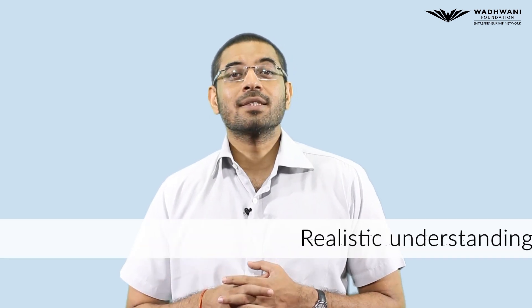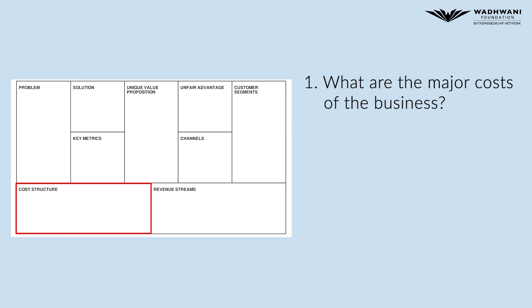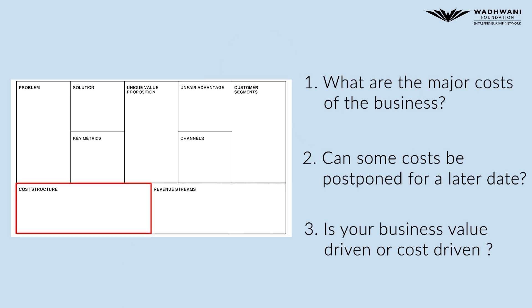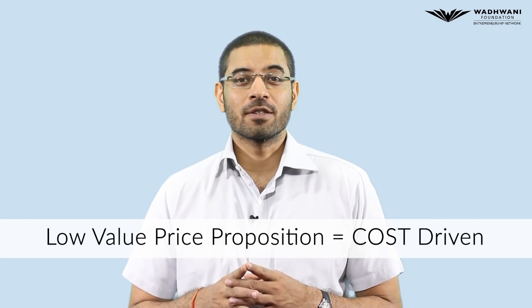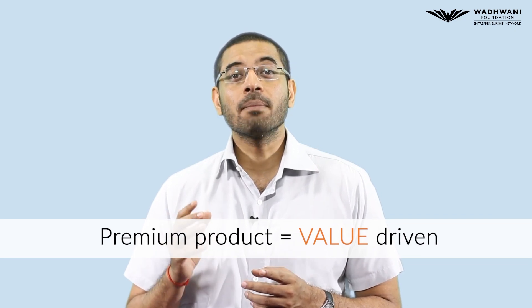The first step for an entrepreneur is to identify all costs associated with the business. A realistic understanding of the costs of the business is one of the hallmarks of a good business model. To fill out the cost structure block, you need to answer key questions such as: what are the major costs of the business? Can some costs be postponed for a later date? Is your business value-driven or cost-driven? If you have a low value price proposition, then you are cost-driven, and if it is value-driven, then your focus is on value proposition and building a premium product.